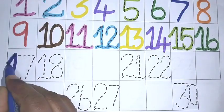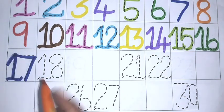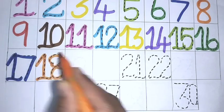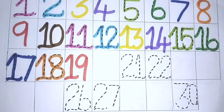One, seven, seventeen. One, eight, eighteen. One, nine, nineteen.